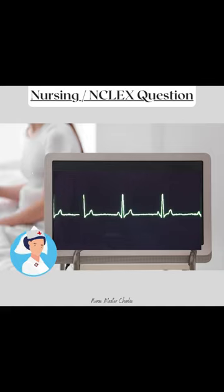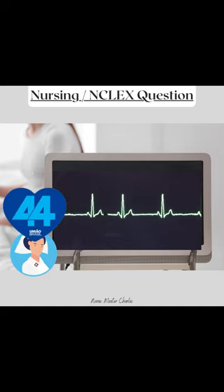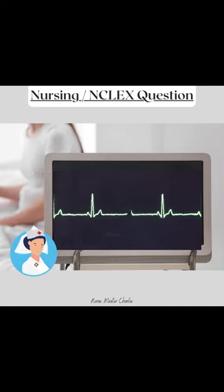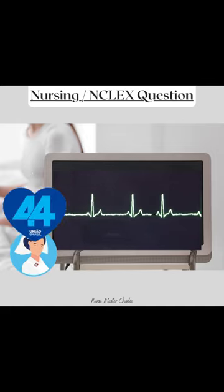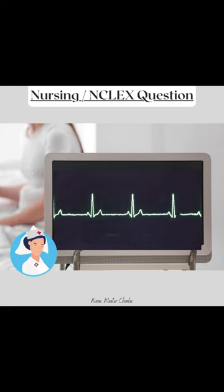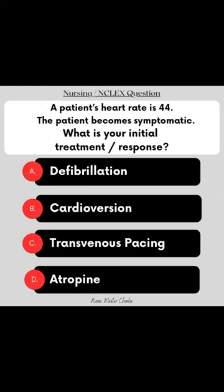A nursing NCLEX question: you walk into your patient's room and you see this on their cardiac monitor. The patient's heart rate is 44 and the patient becomes symptomatic. What is your initial treatment or response? A) defibrillation, B) cardioversion, C) transvenous pacing, or D) atropine?